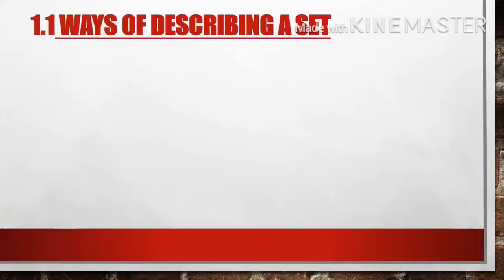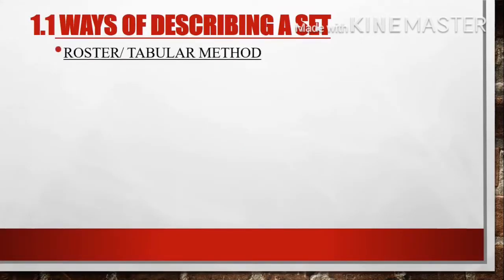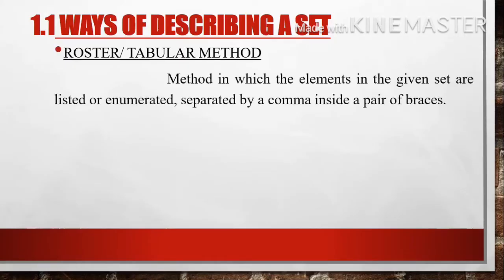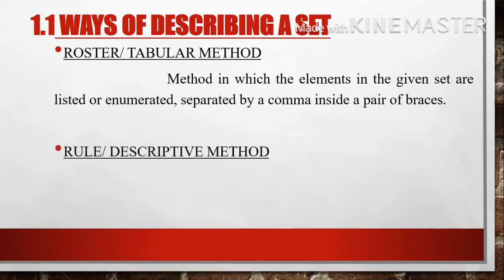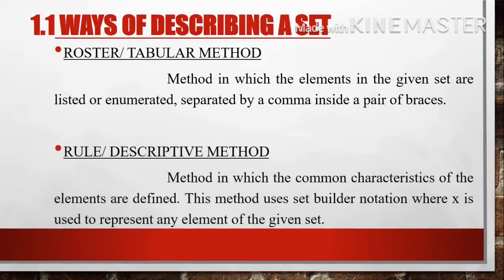There are two ways of describing a set. The first is the roster or tabular method, in which the elements of the given set are listed or enumerated, separated by a comma inside a pair of braces. The second is the rule or descriptive method, in which the common characteristics of the elements are defined. This method uses set builder notation where X represents any element of the given set.